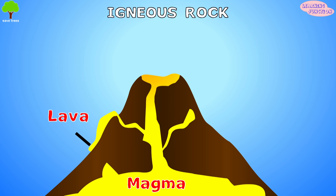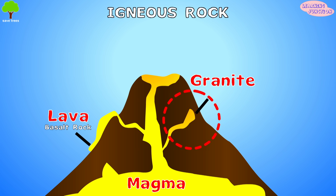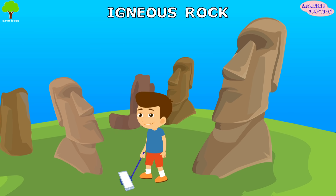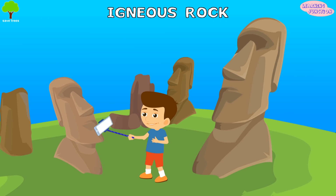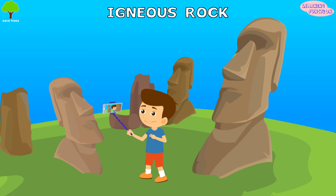It gets cold gradually and changes into basalt rock. The rest of the magma that doesn't seep out stays inside the Earth. The leftover magma inside changes into granite, a type of igneous rock. You may have seen statues made of granite because it's so strong.